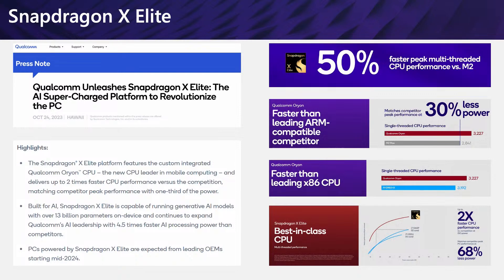Today's session focuses on Windows on ARM and the momentum in the Windows app ecosystem. Qualcomm hosted their amazing annual event, Snapdragon Summit, in October, where they unveiled many innovative technologies, including the announcement of the Snapdragon X Elite platform for Windows, which has created a lot of excitement in the tech community. The X Elite platform is built for running complex generative AI models locally while delivering market-leading performance and incredible battery life. Qualcomm highlighted that X Elite gives OEMs the ability to create devices across different form factors — from two-in-ones and ultra-portables all the way up to laptops with large displays.